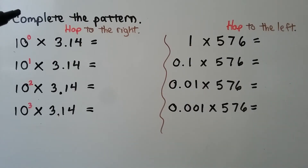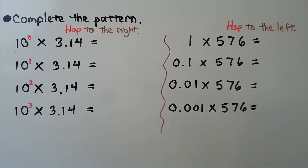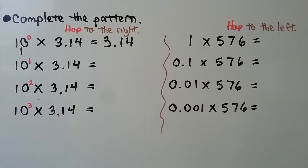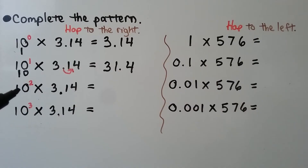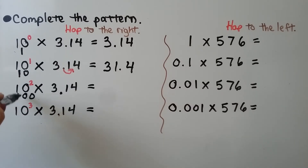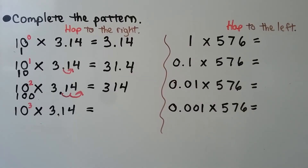We need to complete the pattern. We have 10 to the zero power times 3 and 14 hundredths. Ten to the zero power is just a one, so we have one times 3 and 14 hundredths — that's equal to 3 and 14 hundredths. Ten to the first power means we just have one factor of ten, so we're multiplying by ten. We have one zero, so we move the decimal point one hop to the right — from in between the three and the one to in between the one and the four. Ten to the second power times 3 and 14 hundredths gives us two zeros, so we move the decimal point two hops to the right. The product will be three hundred fourteen.